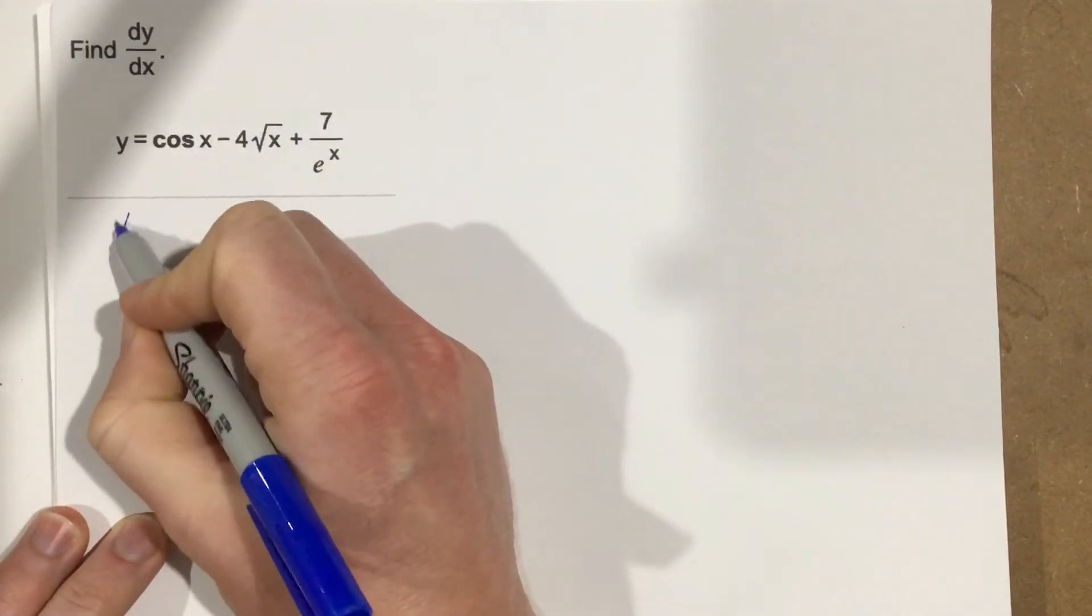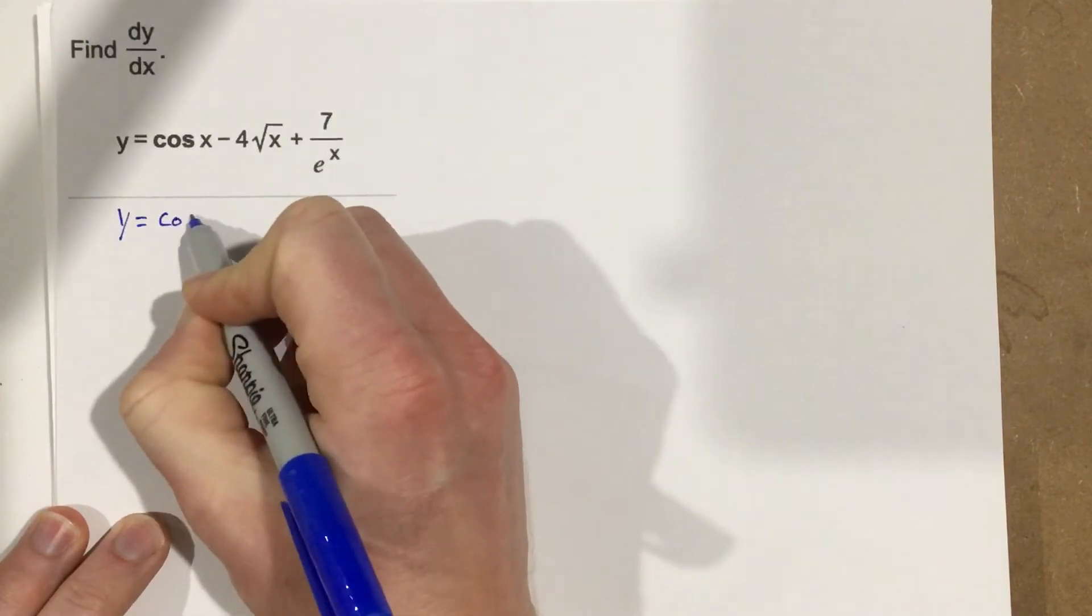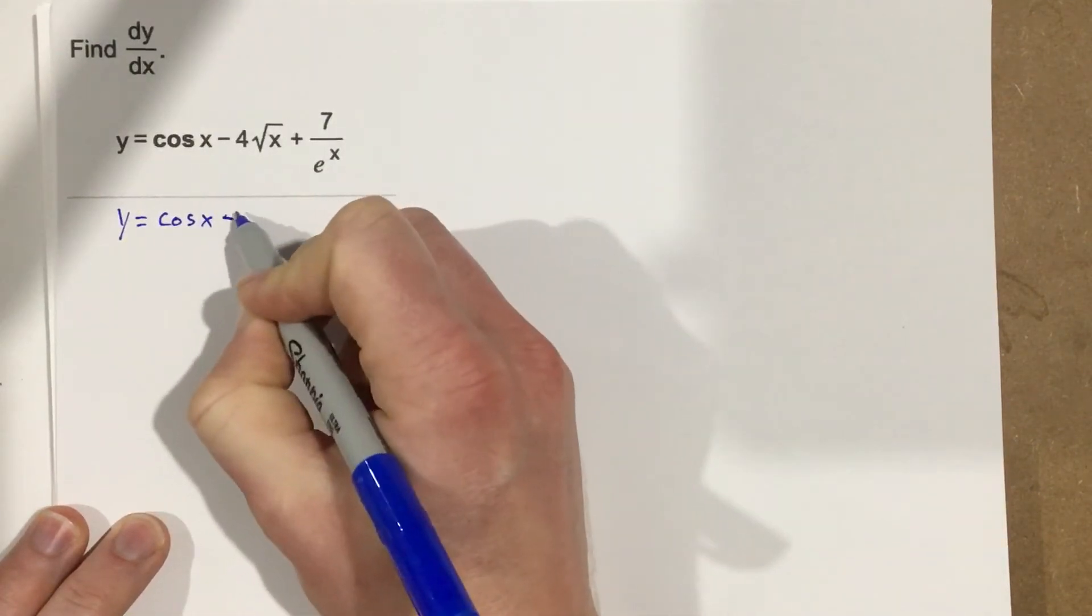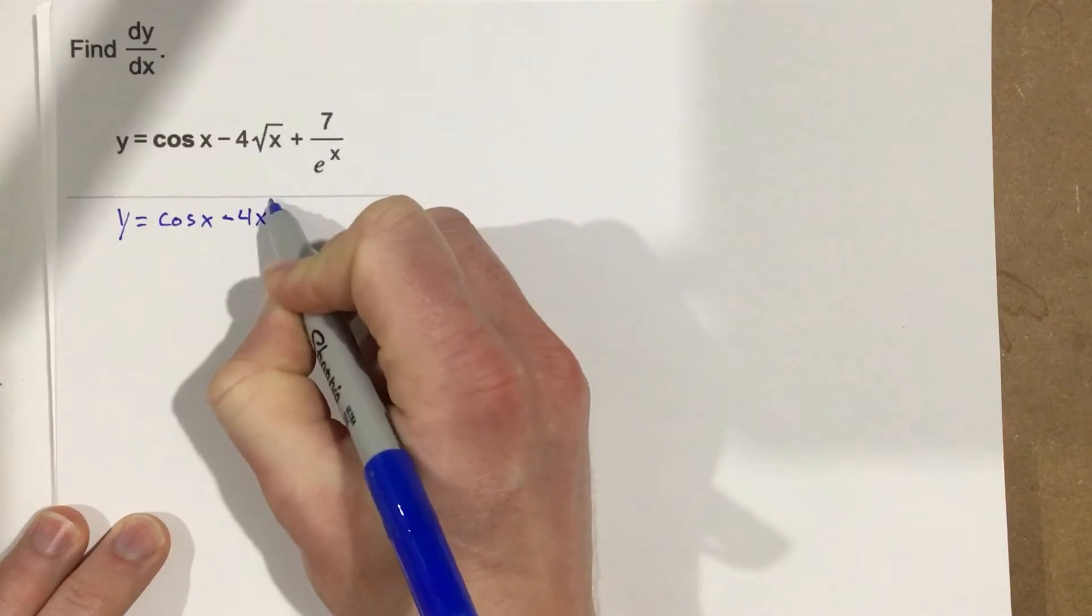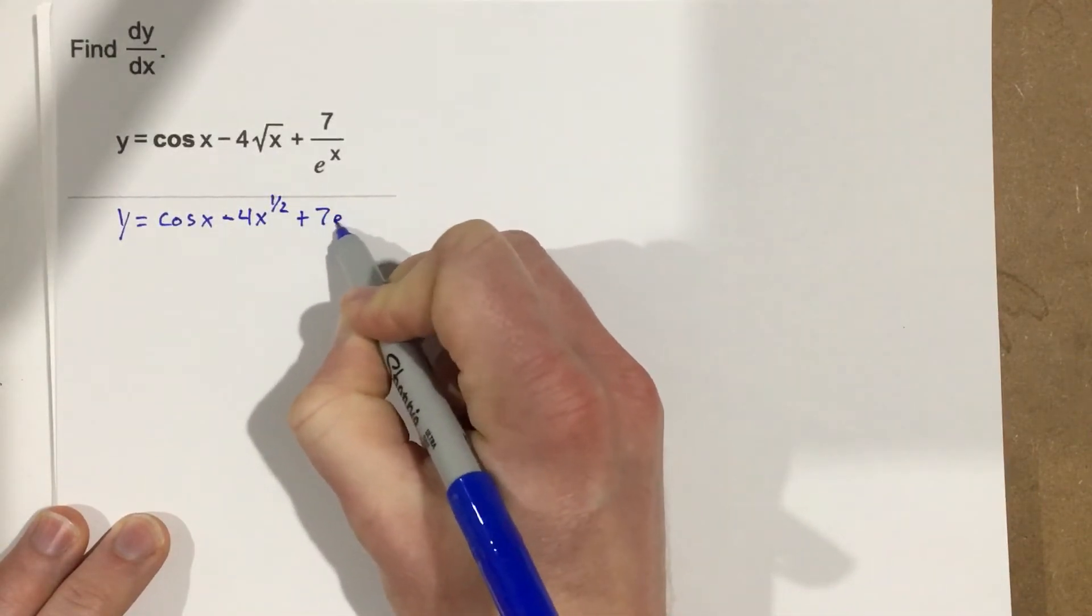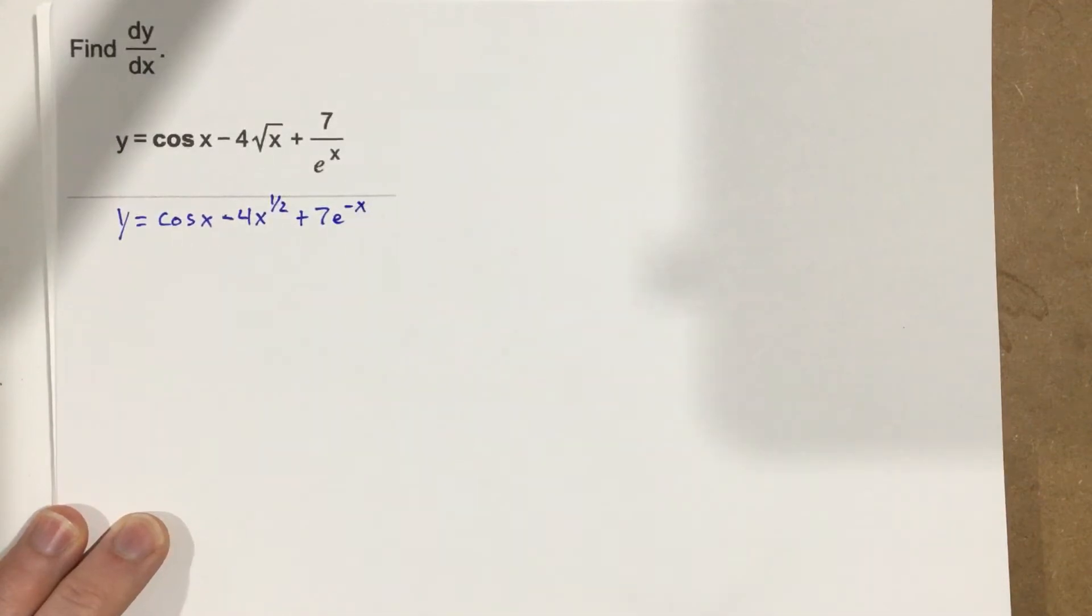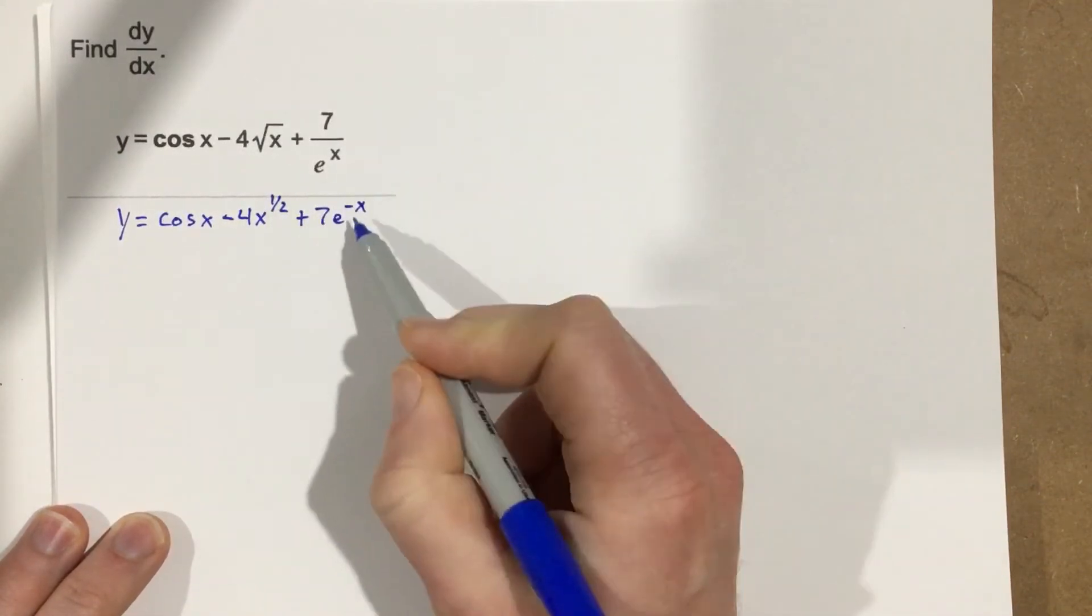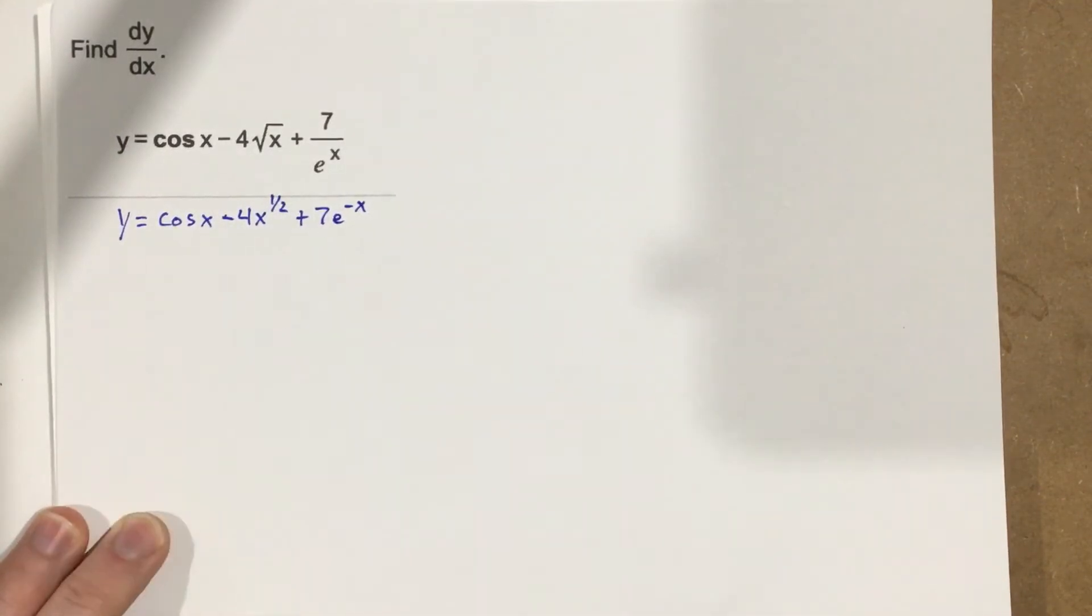So let's go ahead and write this as y equals cosine x minus 4x to the 1 half power plus 7e to the negative x. Now I have the powers on top so they're not in the denominator or they're not in a radical form so I can actually perform my derivative now.